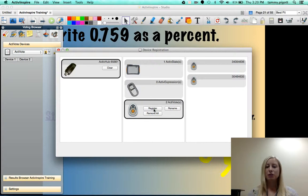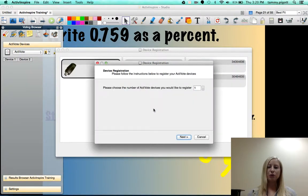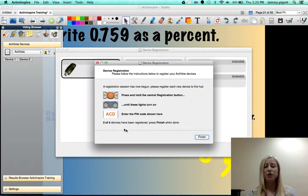So once you click on register it's going to walk you through some different items here so you can choose the number of active votes that you like. I'll just say five right now and you can just click next. And then it will tell your students this is what I would suggest if you have multiple items have your students have each active expression and do this.